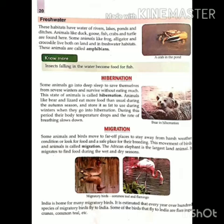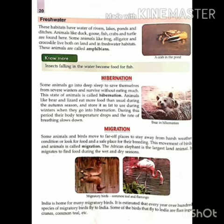Fourth: migration. Yaani kisi cheez ka, kisi janwar ya kisi pakshi ka doosri jagah chale jaana. Some animals and birds move to far-off places to stay away from harsh weather conditions and look for food and a safe place for their breeding. Kuchh janwar aur chidiyaan kathor mausam ki sthiti se dur rehne ke liye, yaani jis mausam mein woh khud ko nahi rakh paate, usse bachne ke liye kahin door doosre sthaanon pe chale jaate hain. Ya us bhojan ki talaash mein jinhe woh khaate hain, unko dhundhne ke liye, ya phir prajan karne ke liye kisi surakshit sthan pe chale jaate hain. Janwaron ki is jaane ki kriya ko migration kaha jaata hai. This movement of birds and animals is called migration.